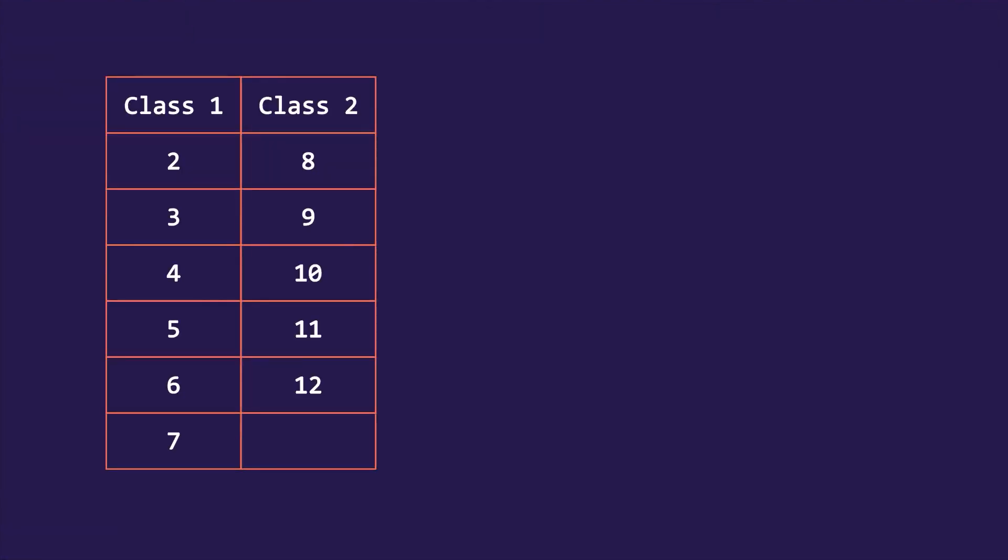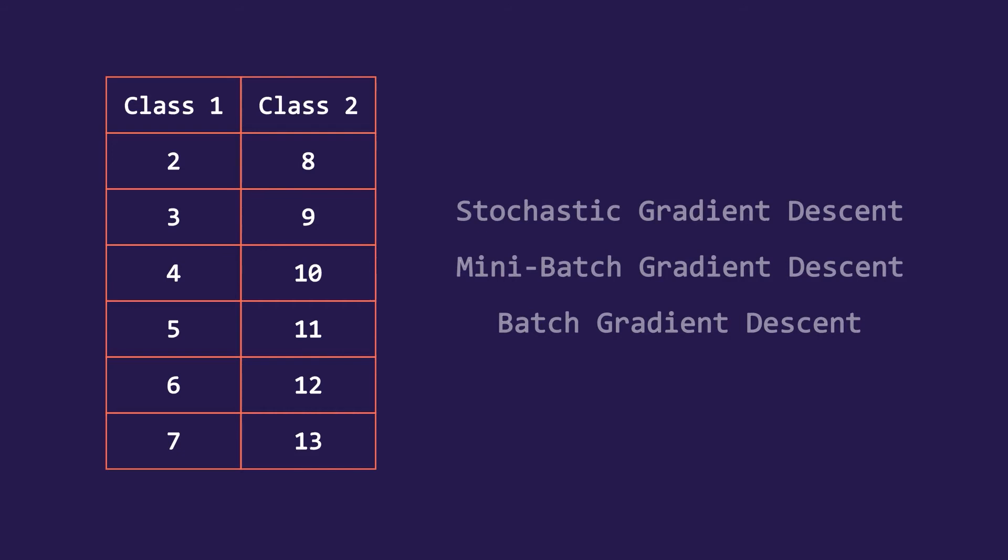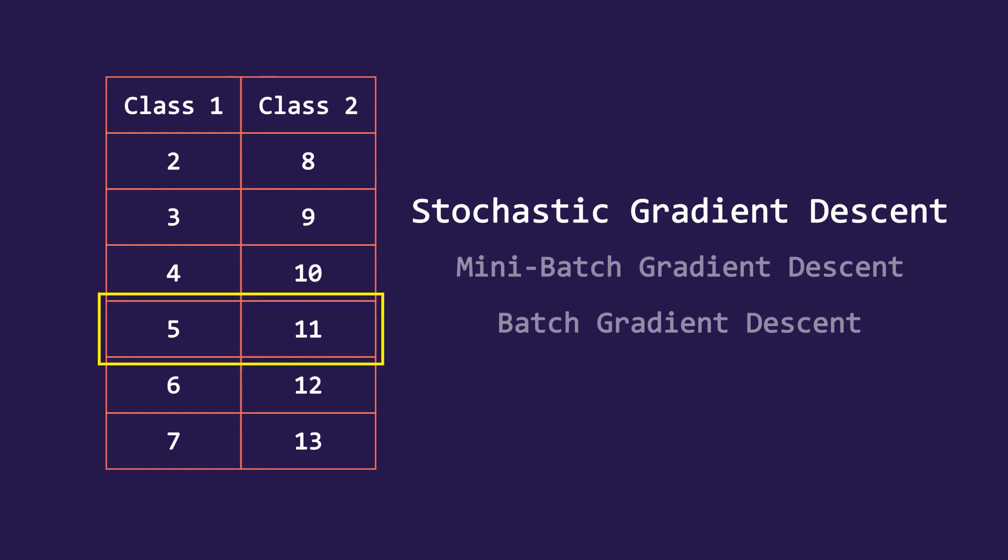There are three types of gradient descent in existence. The first is stochastic gradient descent. Here on every epoch weights and biases are updated by taking a single row and this process is repeated till the end row is reached and one epoch is completed.